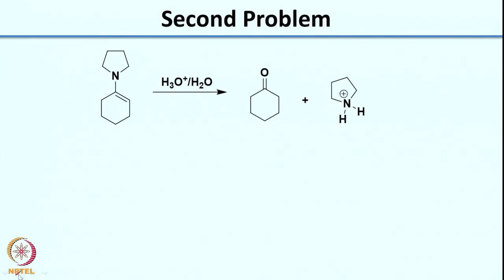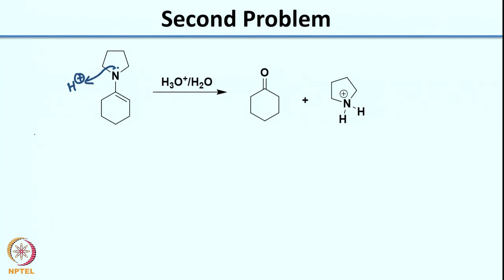Now let us come to the second problem. In this problem you could look at multiple sources — you have a double bond here which is electron rich and is an excellent source, but some of you might be tempted to directly protonate the nitrogen lone pair. Let us see what happens if you do that: directly protonating the nitrogen lone pair would generate a species which would look like this.